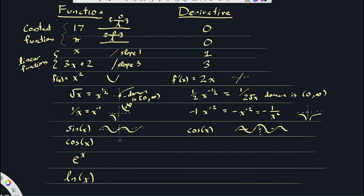The derivative of cosine of x — I didn't prove this, but the proof is about as hard as the proof for sine. The derivative of cosine is negative sine of x. It's a common mistake to just write sine of x, but there's a minus sign. So negative sine of x — the graph looks a lot like sine of x, but it goes downhill first before wobbling up and down just like sine.